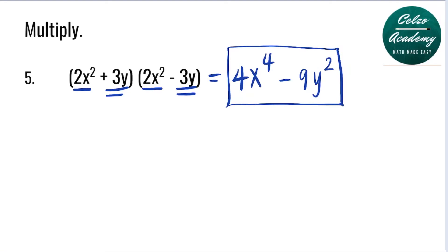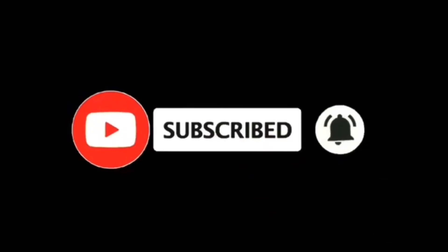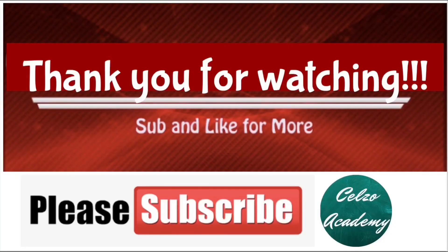Again, the other method is step 1: square the first term, minus step 2: square the second term. Thank you for watching and please consider subscribing to my channel at Celso Academy.